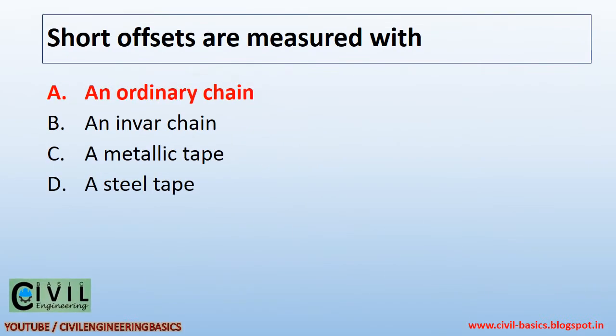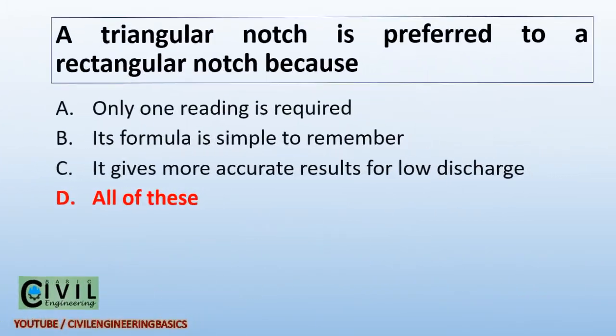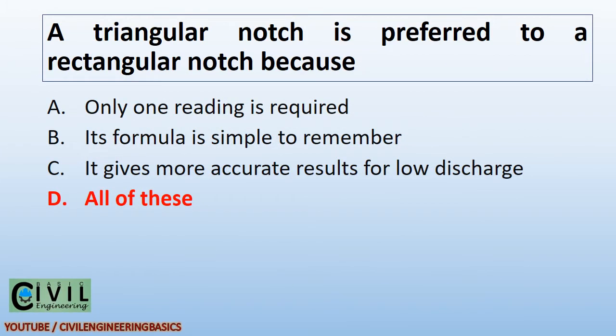Short offsets are measured with an ordinary chain. A triangular notch is preferred to a rectangular notch because only one reading is required.